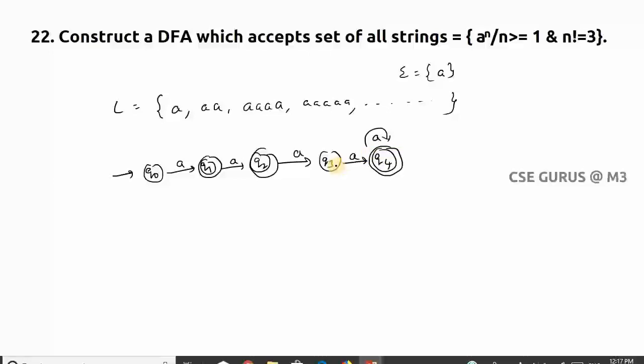Like this you can answer the questions. If it is given an n value and it is given a constant like 'not equals to something', till that you need to give transitions. Afterwards, after this non-final, then give one state which is a final state and give the self-loop.